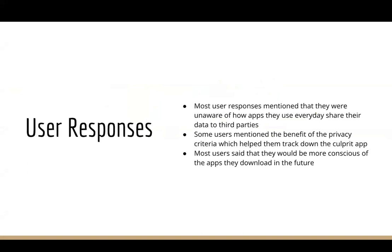Out of user responses, most users found that the privacy criteria on each app page should be really useful. They elaborated that it helped them narrow down the culprit app, which was much easier than skipping through the app's full privacy policy. This suggests that users would be more informed if the App Store provided succinct and comprehensible privacy rubrics.